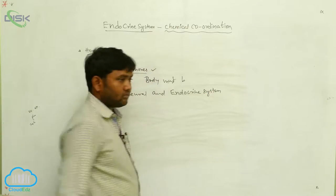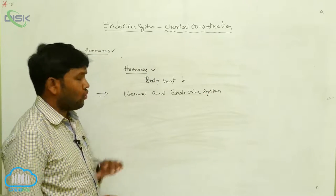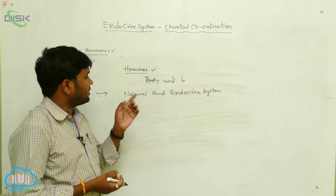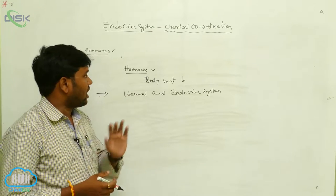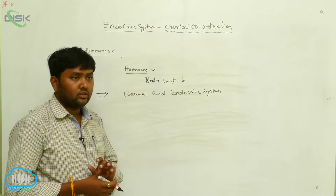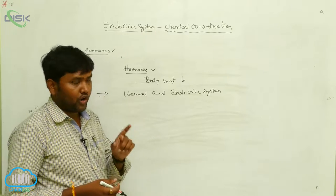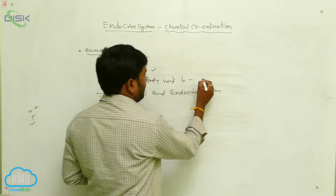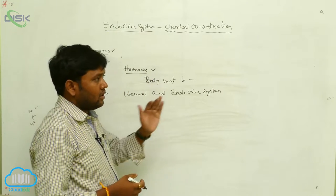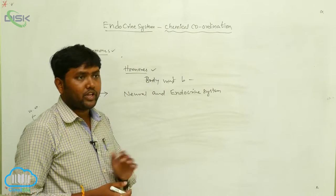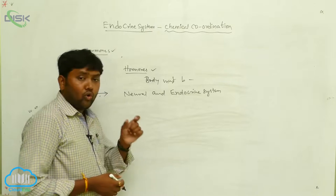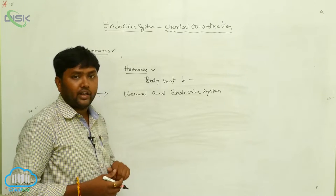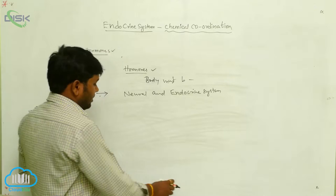Generally, homeostasis is the process maintained by the organs. The organs and their secretions must be coordinated, and that coordination will be provided by the neural and endocrine system.